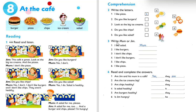Exercise number three: write mom or Jim. Read the conversation again to find the correct answer. Number one — I like salad. Who likes salad? The example answer is mom. Number two — I like burgers. Who likes burgers? Jim likes burgers.